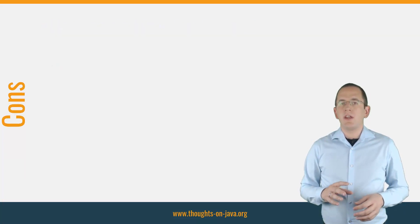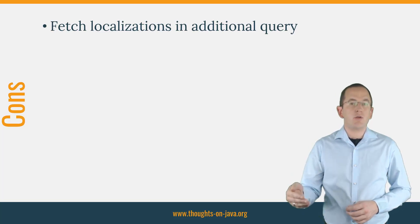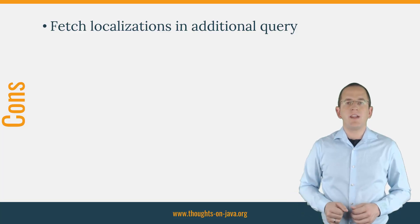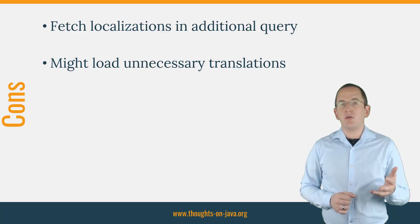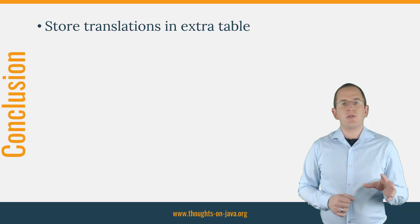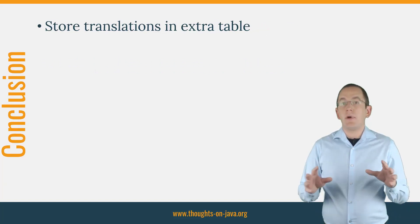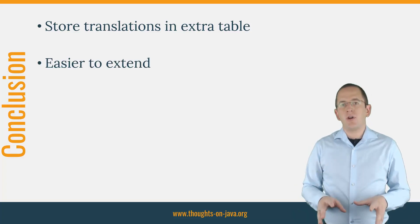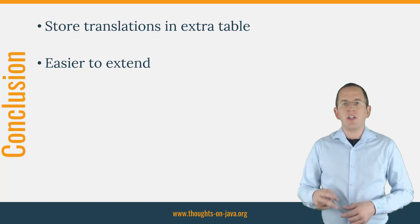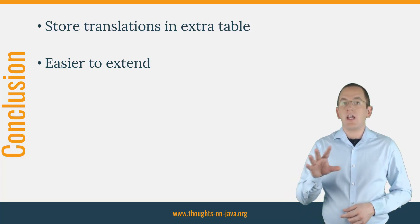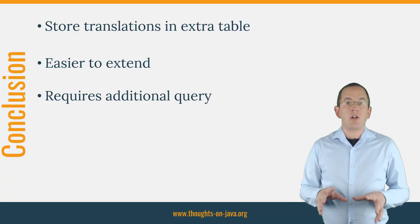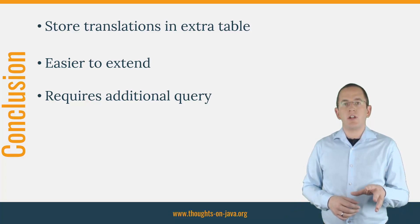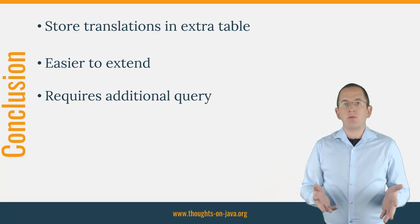Storing your translations in a separate table is a little more complicated, but it provides several benefits. Each new translation is stored as a new record in the localizedProduct table, enabling you to store new translations without changing your table model. Hibernate's second-level cache provides an easy way to cache the different localizations. In my experience, other attributes like the price change more often than translations, so it can be a good idea to separate localizations from the rest of the data to cache them efficiently. The downside is that Hibernate needs to execute an additional query to fetch the associated localizedProduct entities, and fetching them may load translations you don't need for your use case.